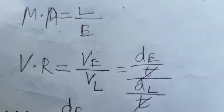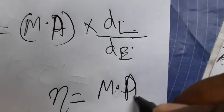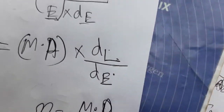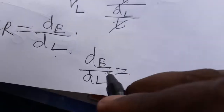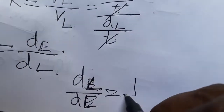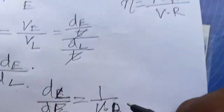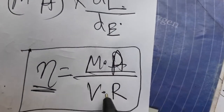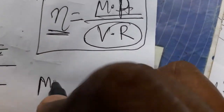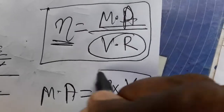We have displacement of load by effort, and velocity ratio gives displacement of effort by load — so they are inversely related. Displacement of effort by displacement of load is the velocity ratio, so load by effort equals one by velocity ratio. Therefore, the final relation is: efficiency equals mechanical advantage divided by velocity ratio. Rearranging: mechanical advantage equals efficiency times velocity ratio.